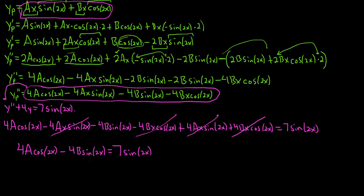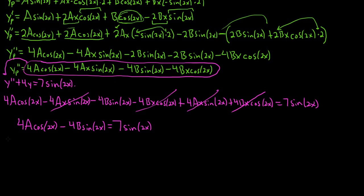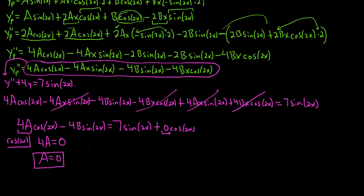Now we're going to equate coefficients. Looking at the cosine 2X terms: on the left-hand side the coefficient is 4A, and on the right-hand side there is no cosine 2X term, so it's 0. That means 4A equals 0, so A equals 0. For the sine 2X terms: on the left-hand side the coefficient is negative 4B, and on the right-hand side it's 7. So negative 4B equals 7, which gives B equals negative 7 fourths.